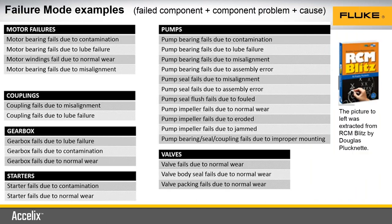Here are some examples. The failed component, then the component problem, then the cause code — let's find those three pieces. Motor bearing — that's the component; it failed — that's the component problem; due to contamination — that's the cause. On the right side: pump impeller — the component; fails due to erosion. Those examples identify failure modes, and this slide actually came from author Douglas Plucknett and his book RCM Blitz.